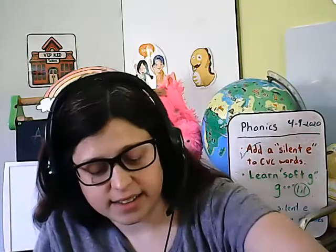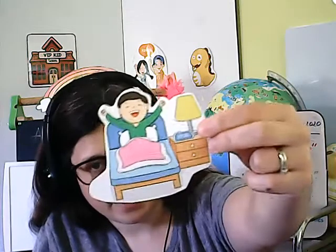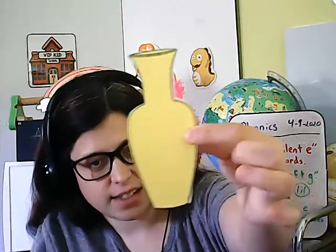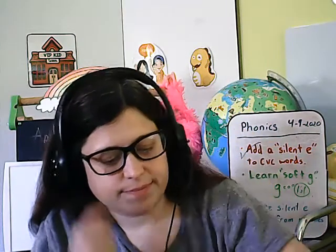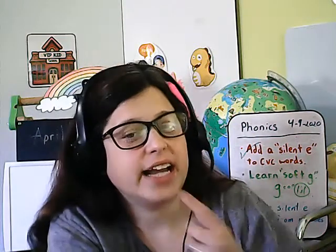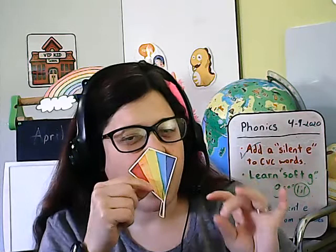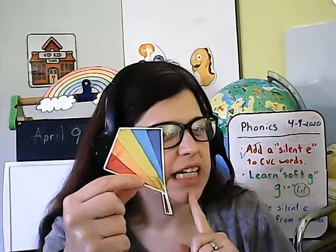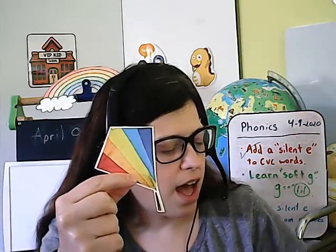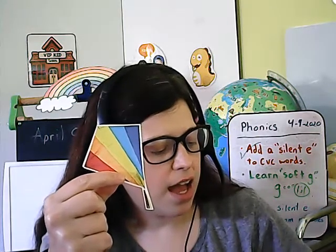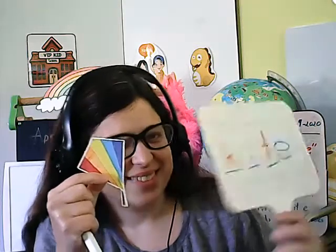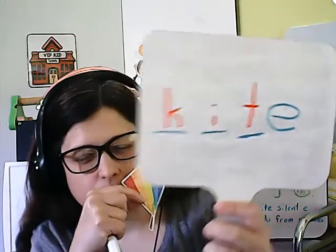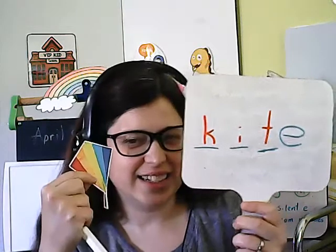Now let's look at the four pictures I have selected today. Kite. Kite. Bike. Wake. Vase. Let's look at kite. Kite — right, kite, with a K. Did you remember the silent E? Good job. Our next word — you don't have to erase your board, just leave it there — bike.